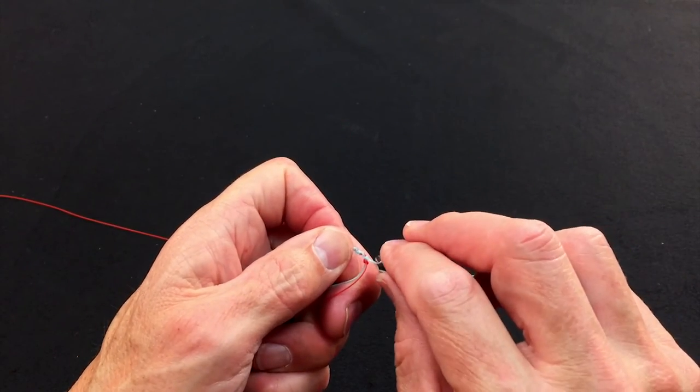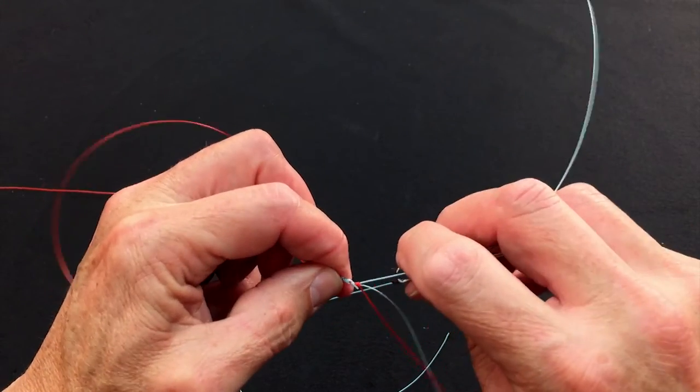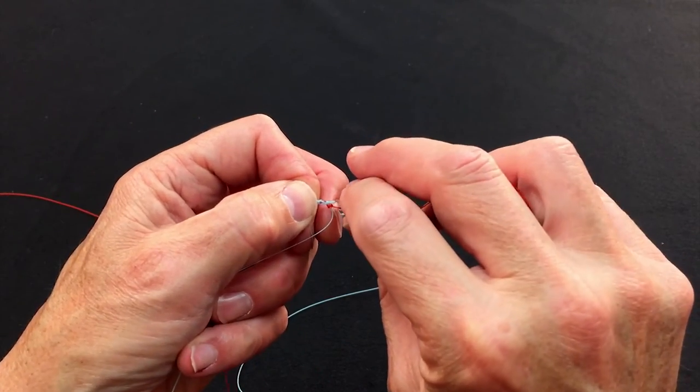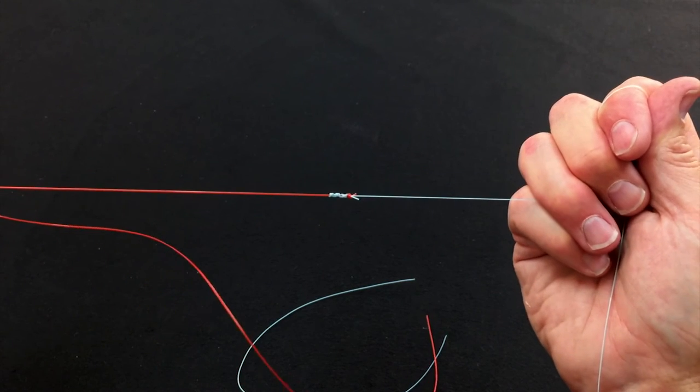Snip the loop off. Snip the tag off. Snip the red tag off. And that is your Slim Beauty knot.